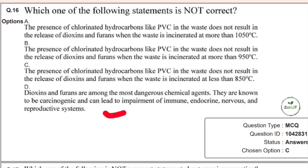Statement A states: the presence of chlorinated hydrocarbons like PVC in the waste does not result in the release of dioxins and furans when the waste is incinerated at more than 1050 degrees Celsius. Some might think higher temperature means more release — but that is not correct here. High-temperature incinerators are designed to destroy such compounds. Only under low temperature, when partial combustion takes place, are dioxins and furans released.